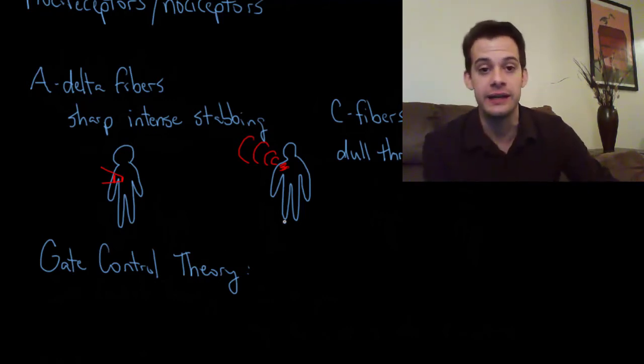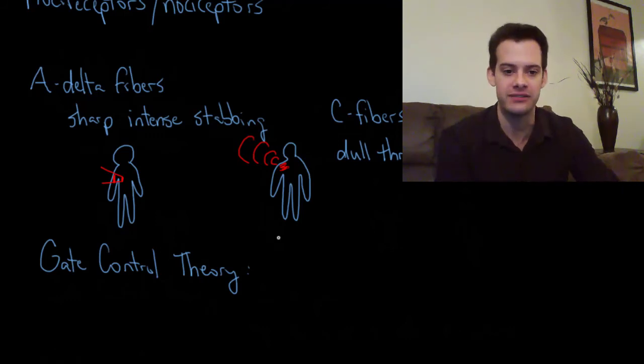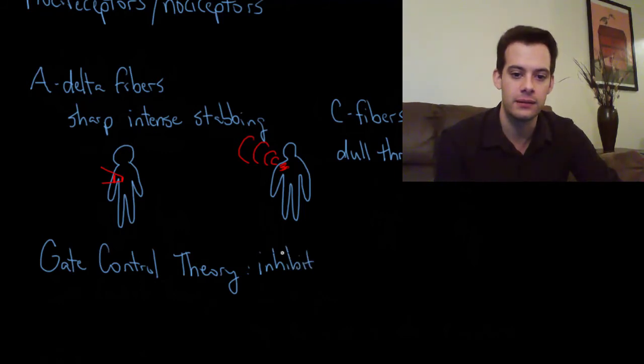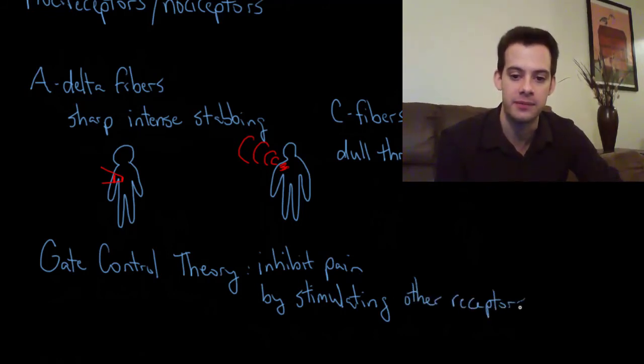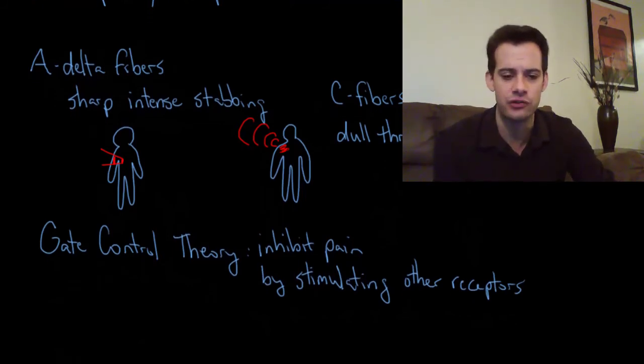Gate control theory is this idea that we can close the gate on pain messages. This is the idea that we can inhibit pain messages by stimulating other receptors, non-pain receptors.